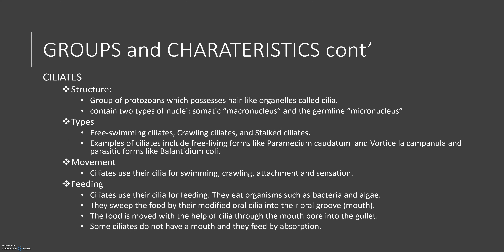Ciliates are the third kind. Ciliates are protozoans which possess hair-like structures called cilia. The different kinds range from free-swimming to crawling and stalked ones. They use their cilia for movement and also for feeding. They eat organisms such as bacteria and algae, and the food is moved with the help of the cilia through the mouth into something called a gullet.